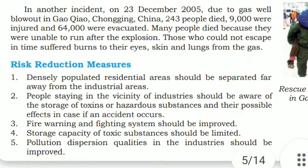In another accident, on 23 December 2005, a gas field broke out in Gaoqiao, Chongqing, China. 243 people died, 9,000 were injured, and 64,000 were evacuated. Many people died because they were unable to run after the explosion. Those who could not escape in time suffered burns to their eyes, skin, and lungs from the gas.